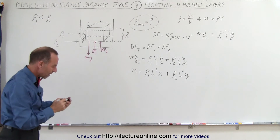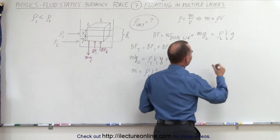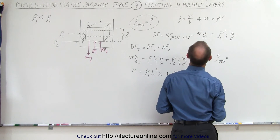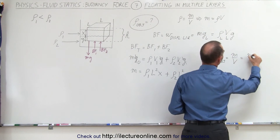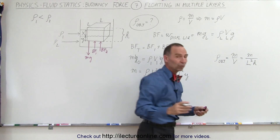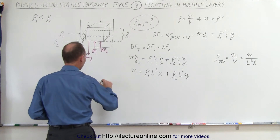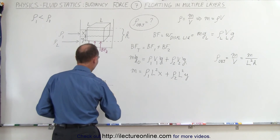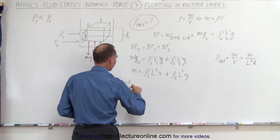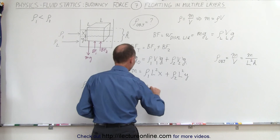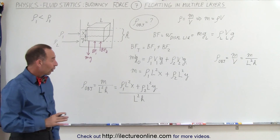Volume 2 is L² times y, and that sum equals the mass of the object. We want the density of the object: ρ_object = mass / volume = mass / (L²h), where L²h is the total volume. Substituting the mass expression gives: ρ_object = (ρ1·L²·x + ρ2·L²·y) / (L²·h). All the L² terms cancel.